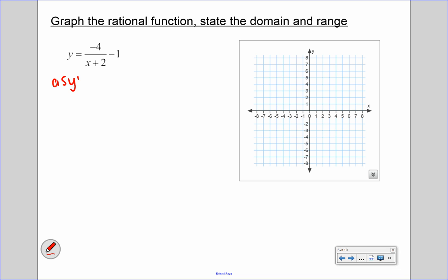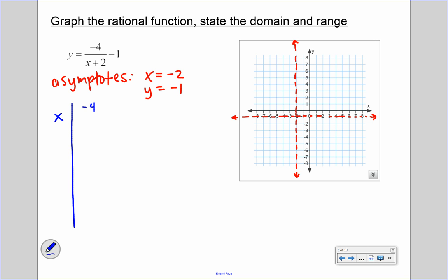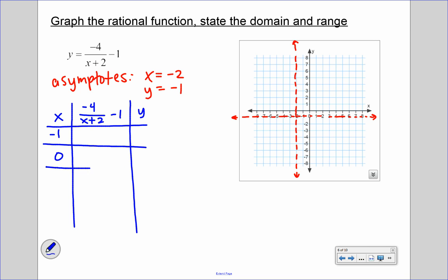Let's work through an example. Our asymptotes are x equals negative 2 and y equals negative 1. Remember: we always switch the sign for x, and always keep the sign for y. We graph a vertical line at x equals negative 2 and a horizontal line at y equals negative 1. For our table of values, I'll choose two points to the right of the vertical asymptote — negative 1 and 0 — and two to the left — negative 3 and negative 4.